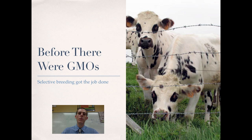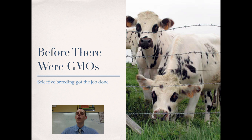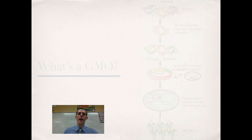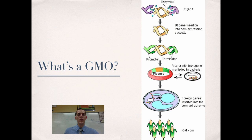They took their corn that had the best production and mated it together — the offspring had better corn production. They took the animals that were the strongest, mated them together, and the offspring were stronger. So throughout agricultural history, farmers have selectively bred for the traits that they want. Now with the advent of science, we've gotten to a place where we can speed up and tweak the process through genetically modifying an organism.